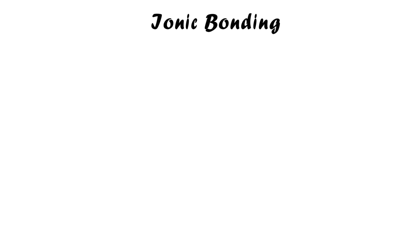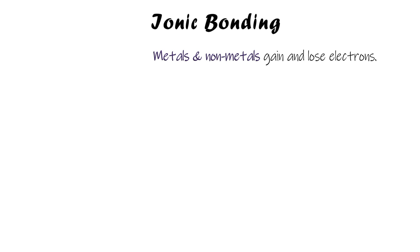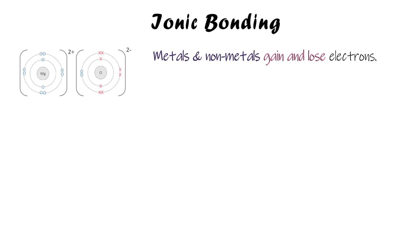Now we're going to look at ionic bonding, which is a little bit different to covalent bonding. This happens when you've got both metals and non-metals — it won't work unless you've got at least one of each. This time, instead of sharing electrons, they gain and lose electrons. Here we've got a magnesium atom which has lost two electrons.